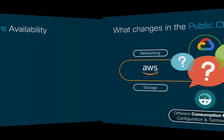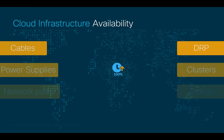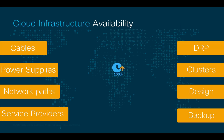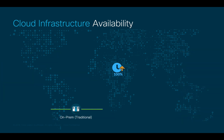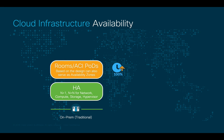First, let's talk about availability. Today, you have to take into consideration multiple things to keep the business operational 24 by 7 when running on-premises. We usually include high availability and redundancy at the element level, for switches, servers, storage, hypervisors, and so on. Then, we may provide different rooms, ACI pods, or even data centers to increase availability within a geographical area.